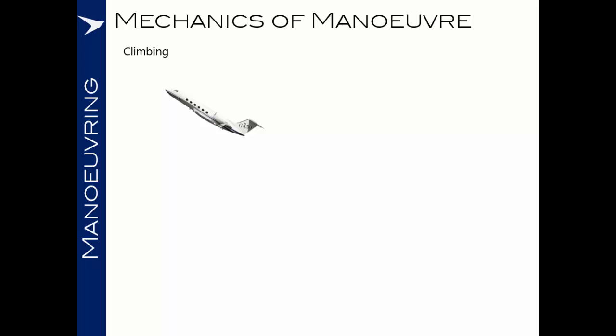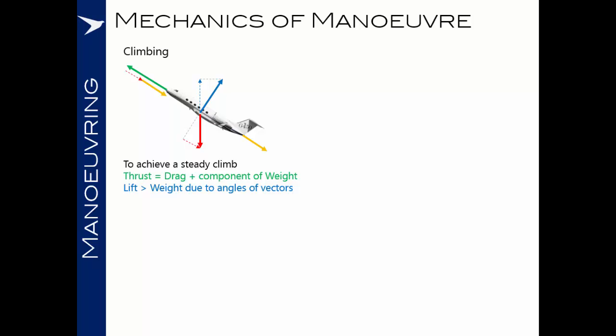Moving on to the mechanics of maneuvering flight — let's consider the forces in different conditions. In a climbing scenario, weight always acts towards the centre of the earth, and we must generate lift to counter it. The lift produced is greater than the magnitude of the weight. Drag acts to slow the aircraft down, but we also have a component of the weight vector acting in the same direction as drag. So thrust must equal drag plus the drag component of weight to hold the climbing angle without accelerating, and lift must be greater than weight due to the angles of the vectors.